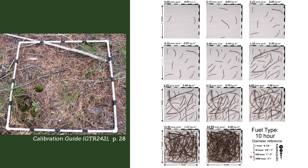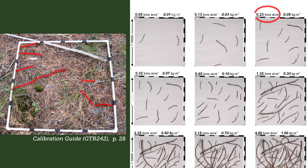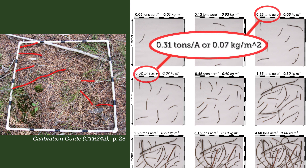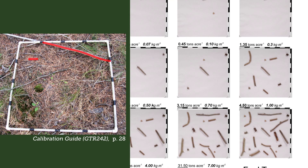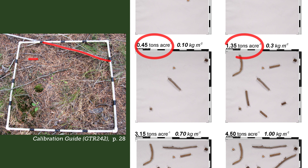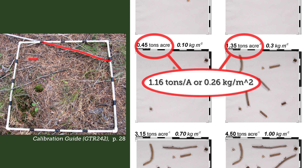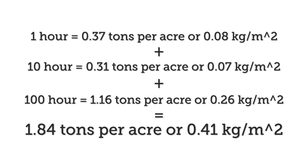Now let's try the ten-hour fuels: which image is higher than our sample, which one is lower, and what do you think the loading is? Pause the video if you need a chance to think. Then let's measure the hundred-hour fuels in the same way. We can then add up our fuel components to get the total loading for one, ten, and hundred-hour dead and downed material.